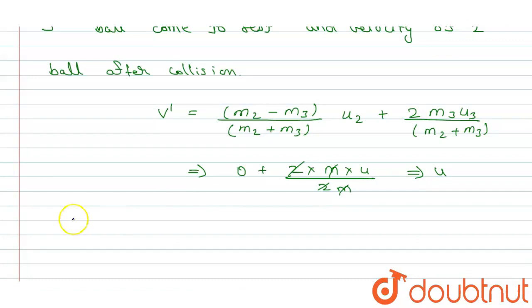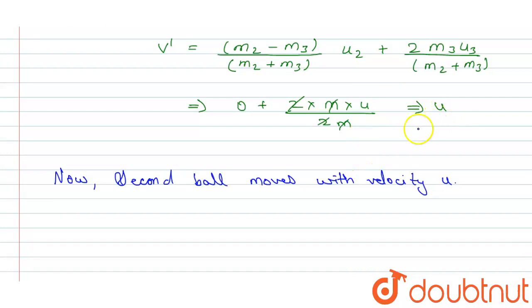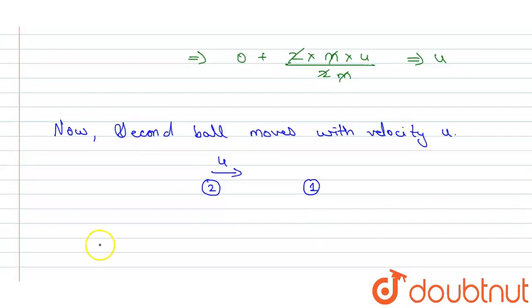Now the second ball moves with velocity u. Here we prove that, and also we know that the second ball is moved towards the ball 1 with velocity u.